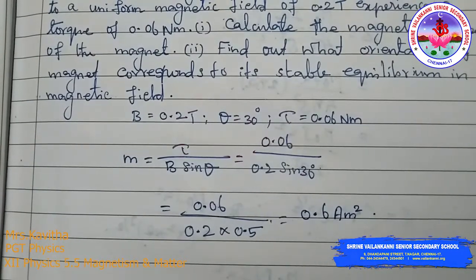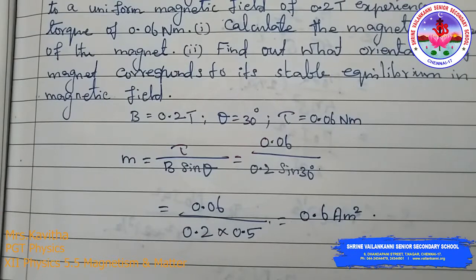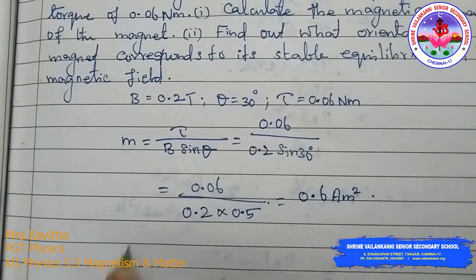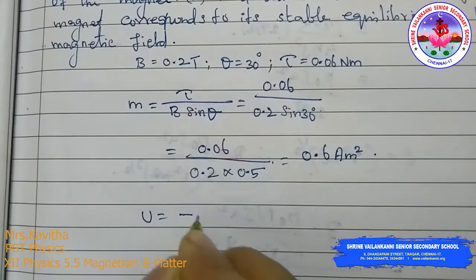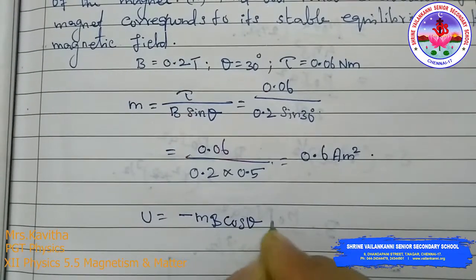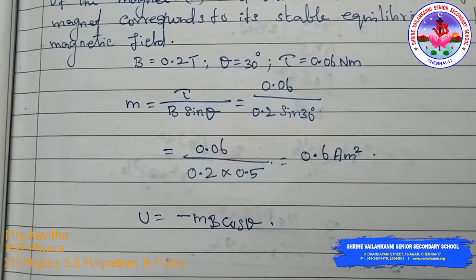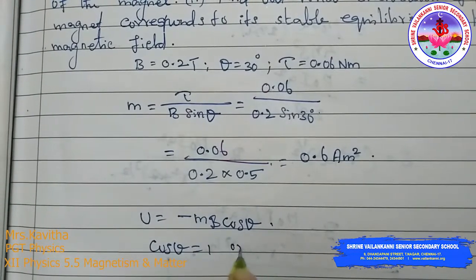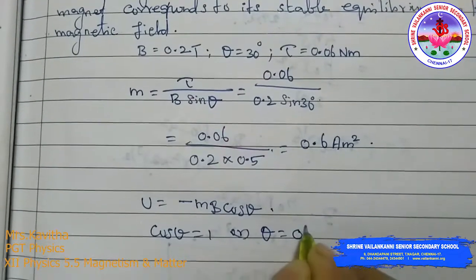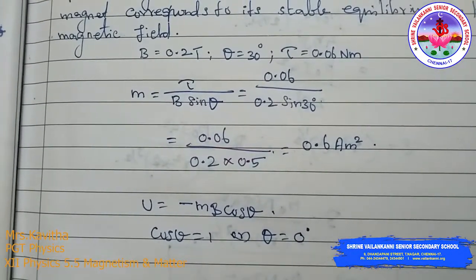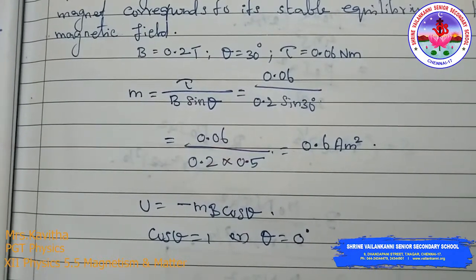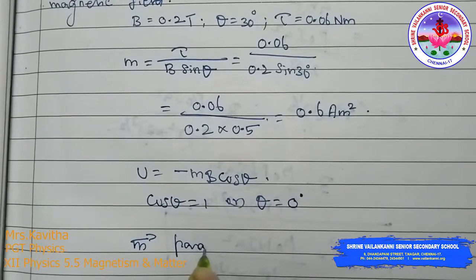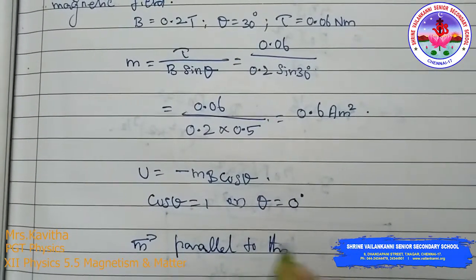For the second part, they asked about the potential energy of a magnetic dipole in a uniform magnetic field, that is the orientation of the magnet. U = minus MB cos theta. For stable equilibrium, the potential energy will be minimum, so cos theta = 1, meaning theta = 0 degrees. The bar magnet will be stable when its magnetic moment M is parallel to magnetic field B.